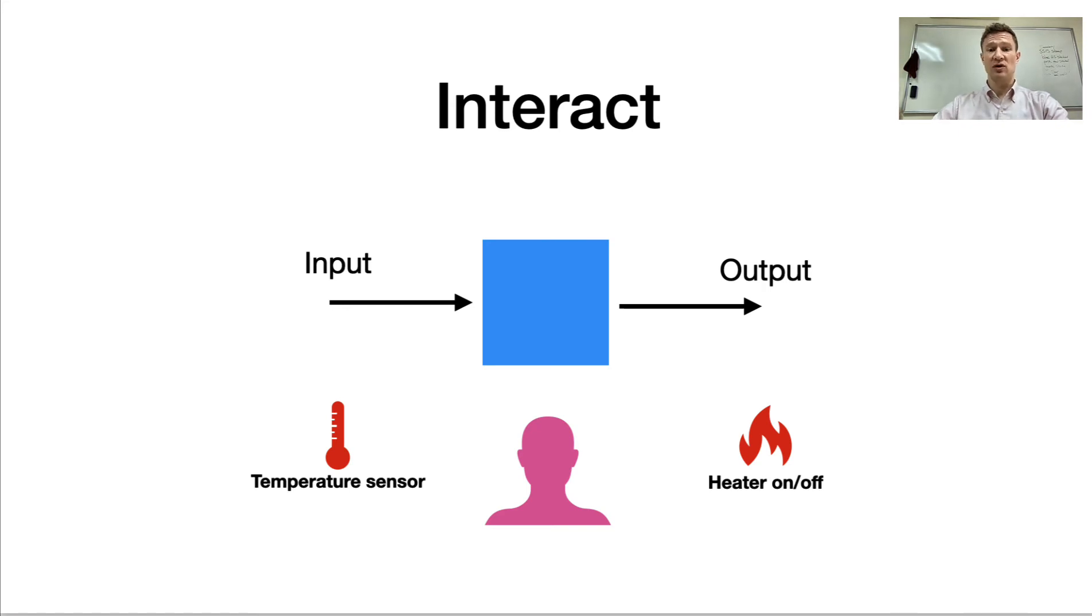So we have a temperature sensor, which tells us what the temperature is. We might look at that temperature sensor and then say, that's too cold. I'm going to turn on the air conditioner or turn on the heater, which is the output. So we have an input, which is the temperature sensor, and we have the output, which is the air conditioner or the heater.